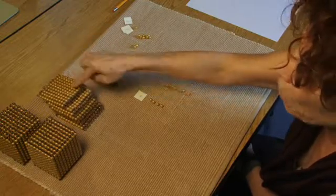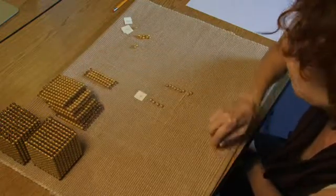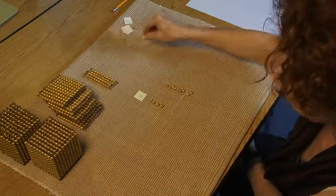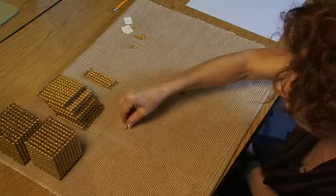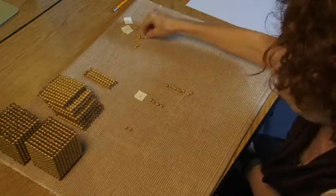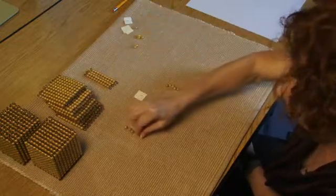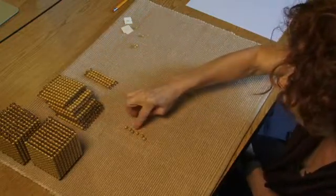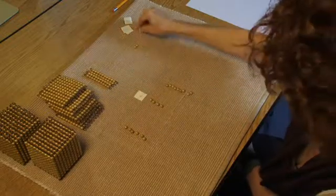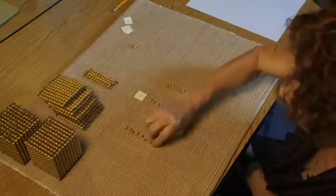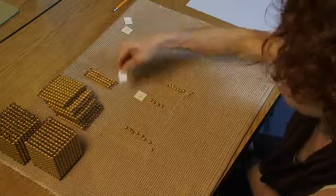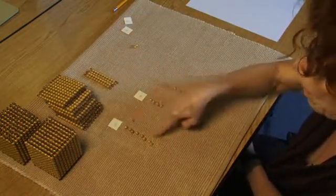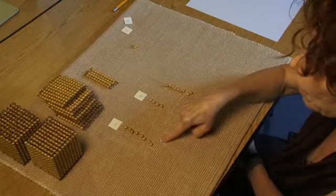But if I take one away from 100 and make it 99, that is divisible by 11. So if I take away one unit for each of the hundreds, the number I have left will be divisible by 11.